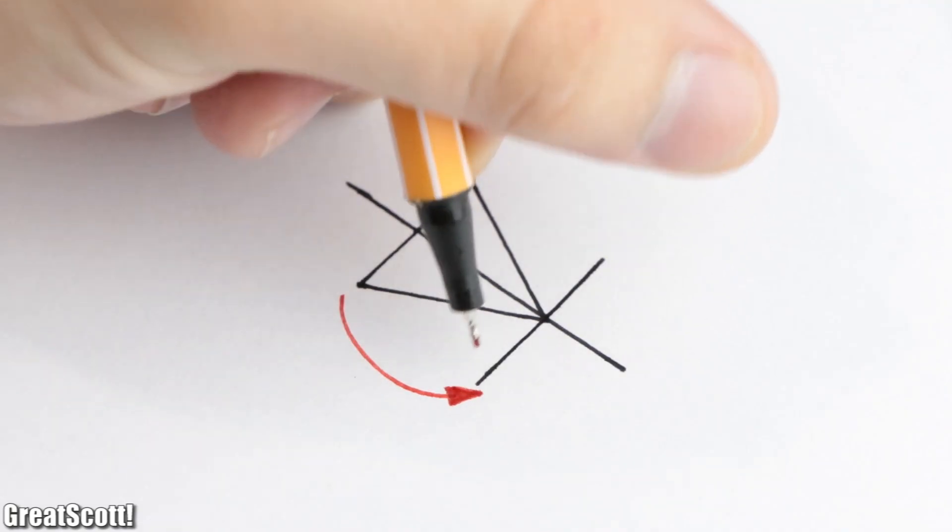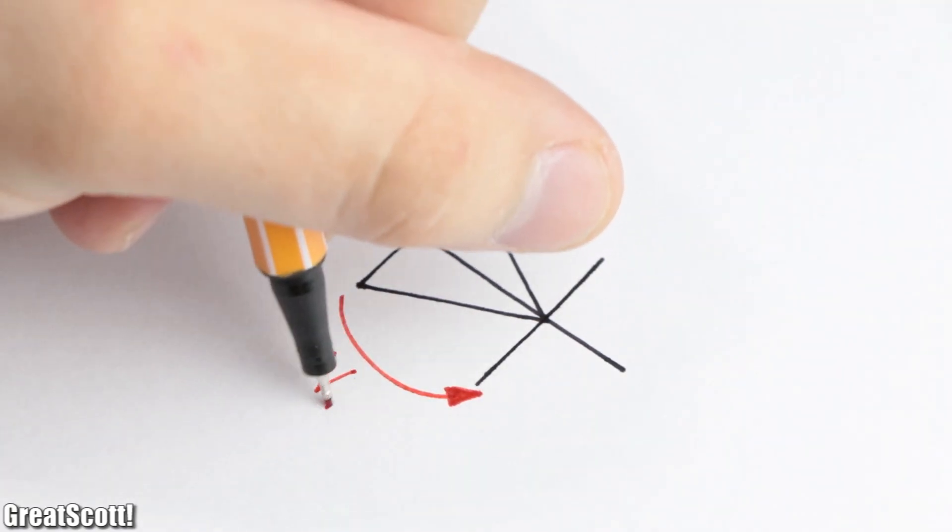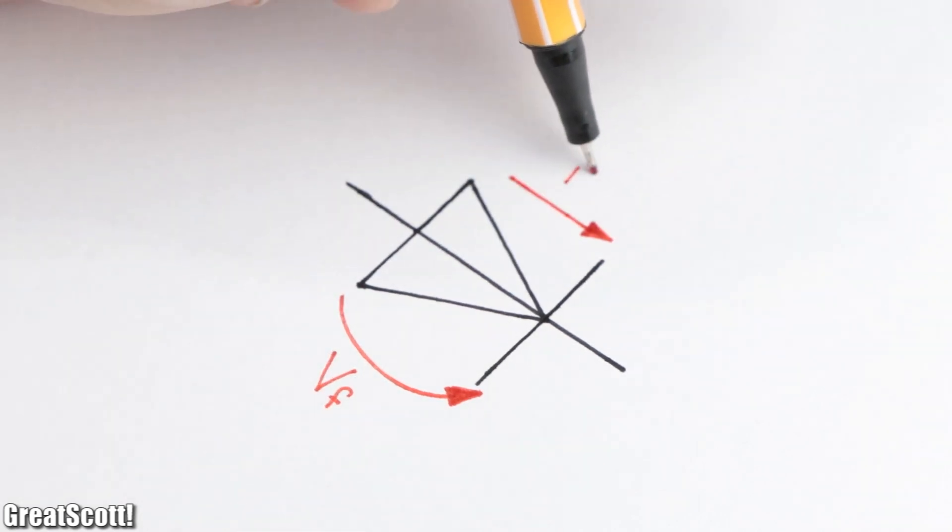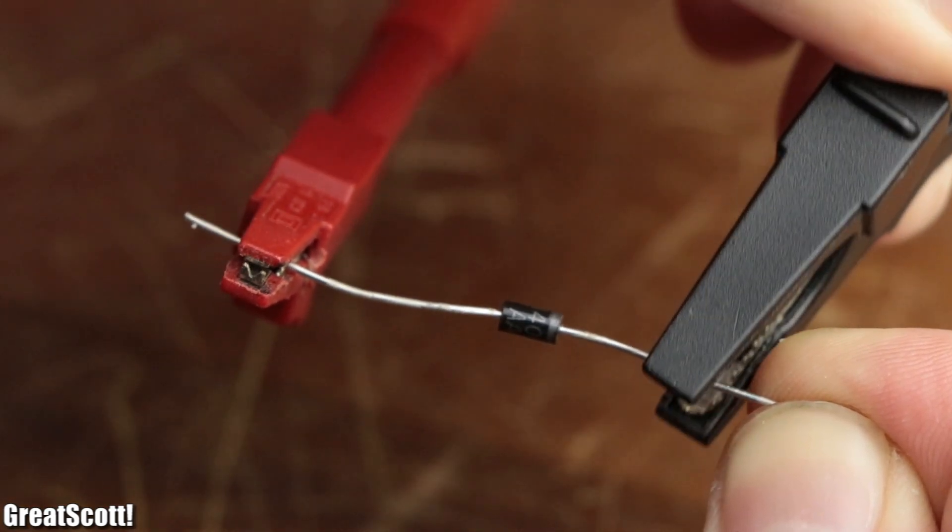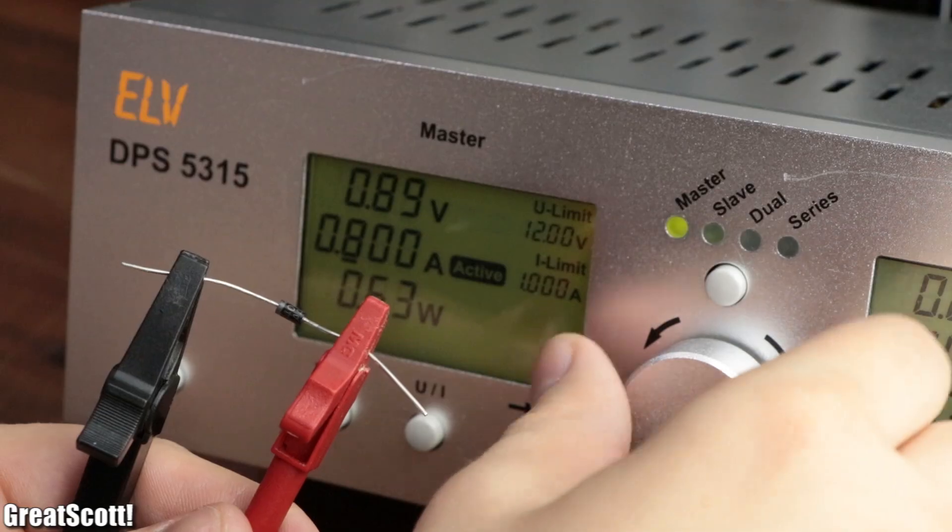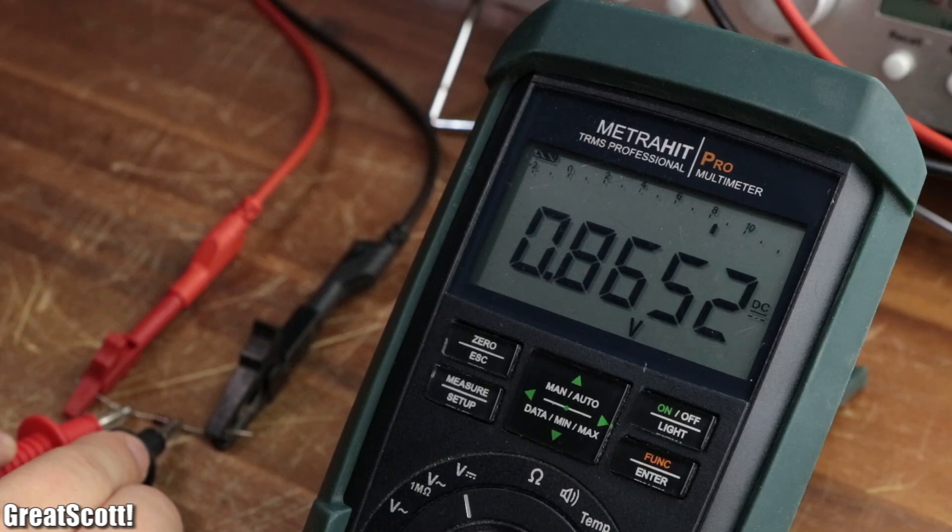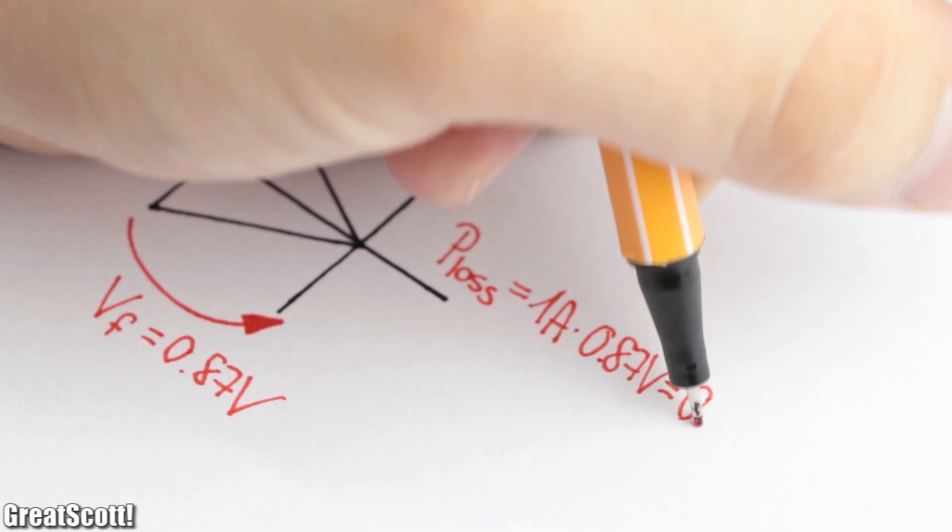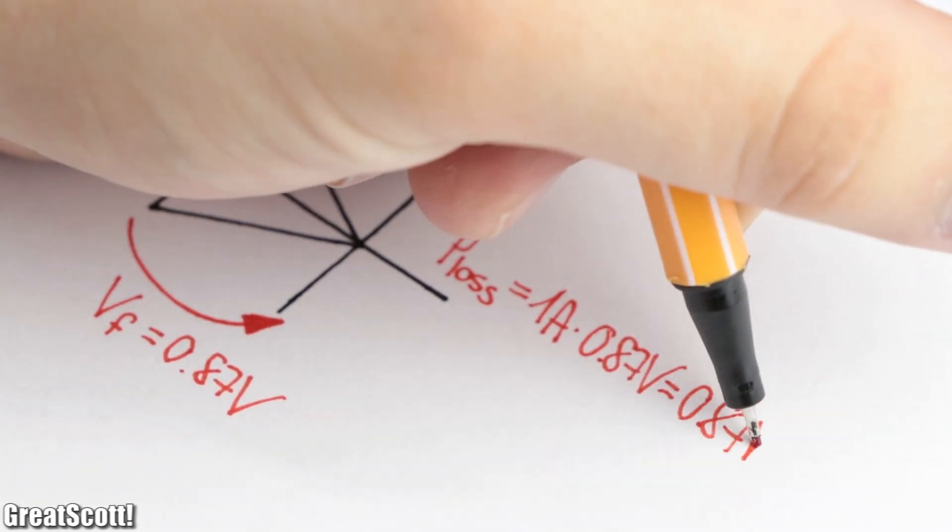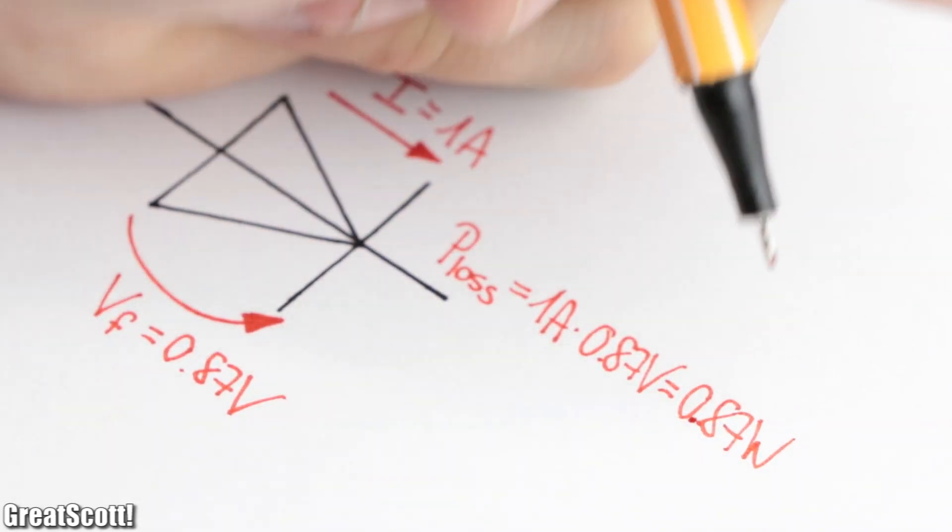As I mentioned earlier, a diode will always create a forward voltage drop when current passes through it. With the 1N4007 as an example, I pass 1A of current through it, which creates a voltage drop of 0.87V, and thus a power loss of obviously 0.87W, which is noticeable by the increased temperature of the diode.